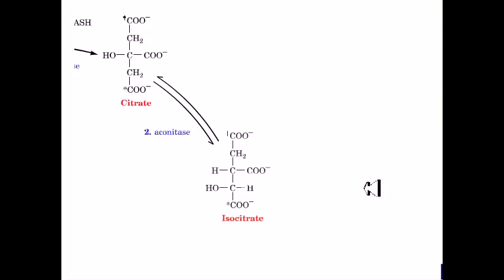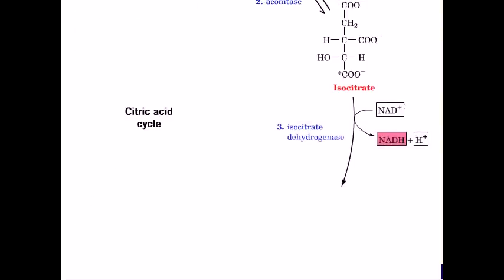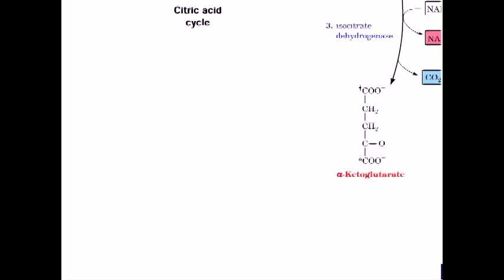Isocitrate is converted into alpha-ketoglutarate by isocitrate dehydrogenase (reaction 3). This reaction requires the coenzyme NAD+ and releases carbon dioxide. In this picture, the carbon dioxide released in this case is from this specific position.